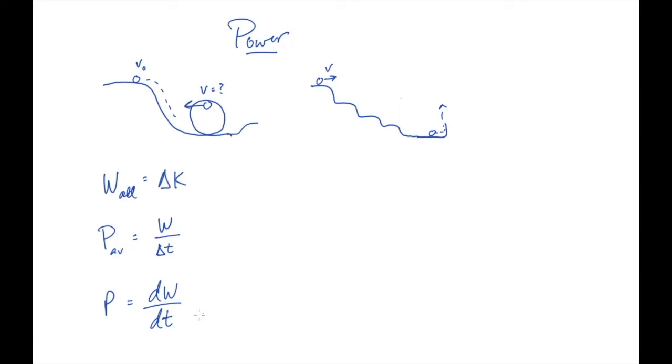There's one useful way to rewrite this expression. The work, remember, is the integral of F dot ds. I can rewrite the numerator of this expression, this dW, as just the integrand. The differential work is the differential contribution to this integral, and that's just the integrand. So I can write this as F dot ds, and divide it by dt. And now if I group these two things together, those are the velocity. ds/dt, where s is a vector there, is the object's velocity.